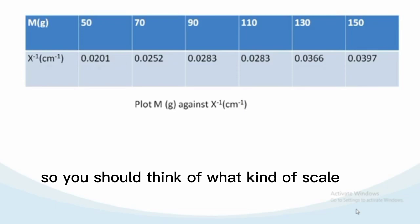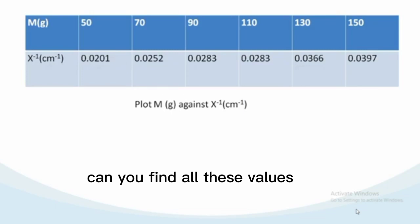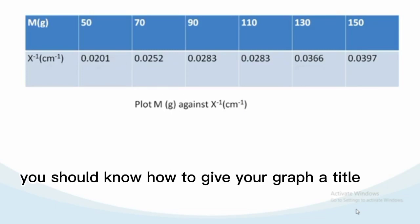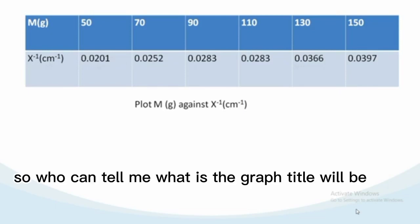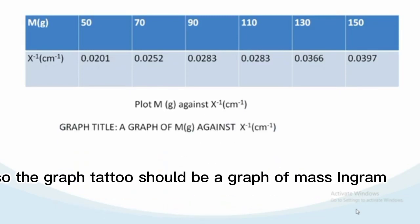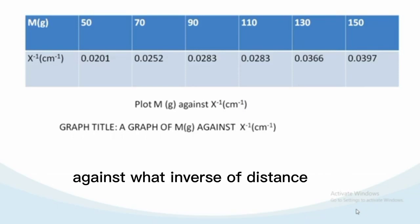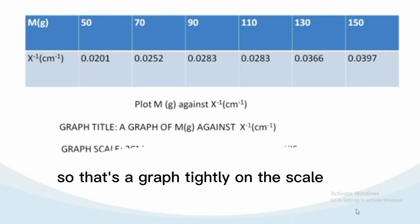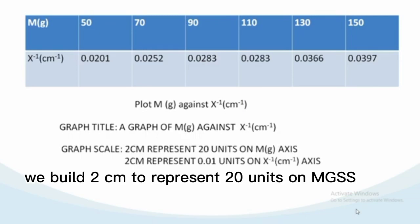You should know how to give your graph a title. The graph title should be: A graph of mass in gram against inverse of distance. The scale will be two centimeters to represent 20 units on M(g) axis, and two centimeters to represent 0.01 units on X^-1(cm^-1) axis.